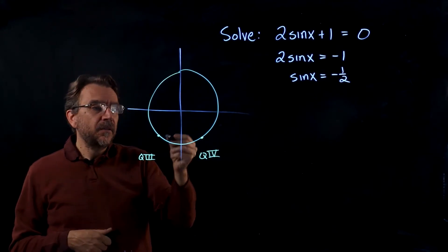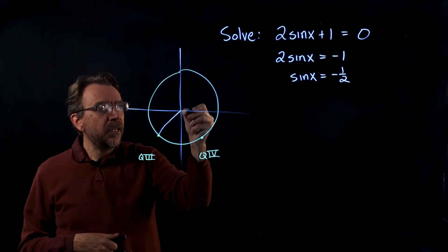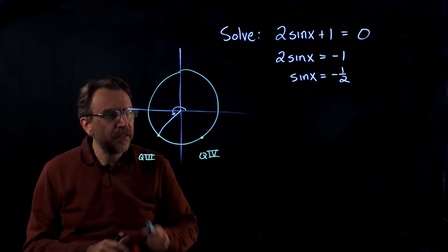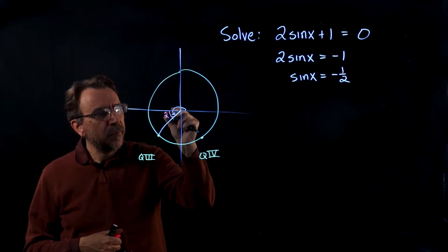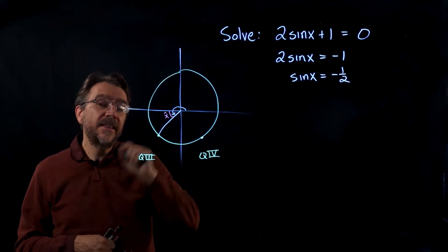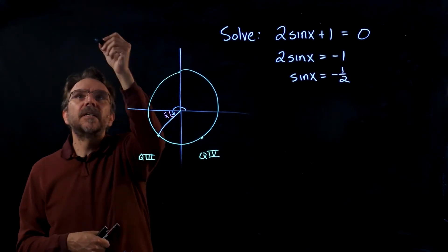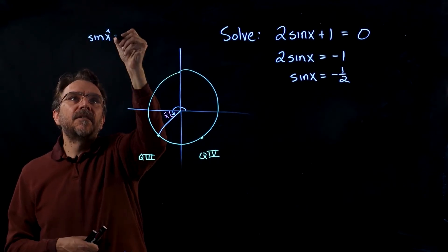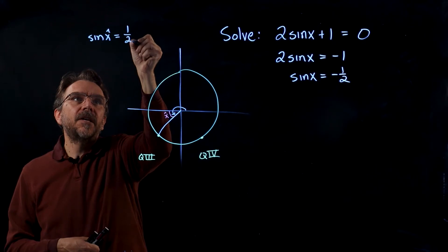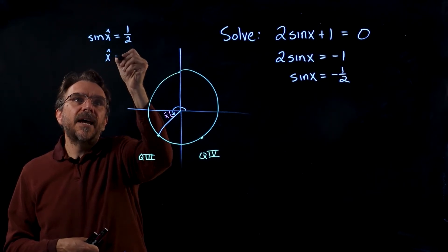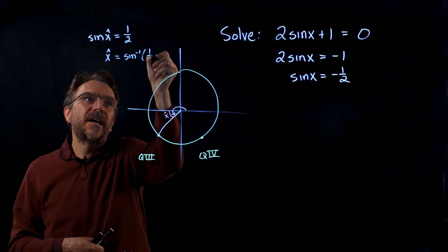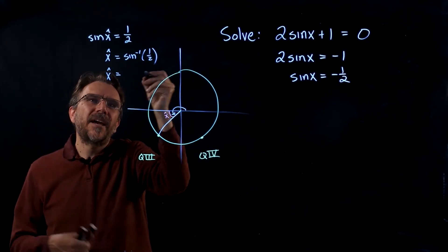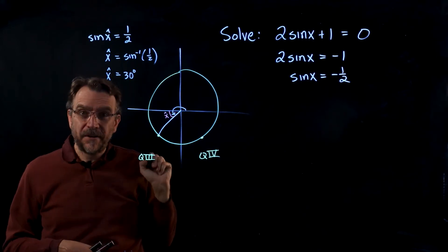We're going to work through the reference angle theorem. If I want this angle x, I can find this reference angle and then work from there. To find that reference angle, we can look at sine of x hat, that's the reference angle, equals the absolute value of that ratio, which is x hat equals sine inverse of 1 half. Sine inverse of 1 half is 30 degrees. That's our reference angle.